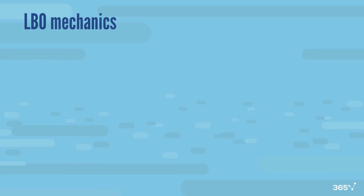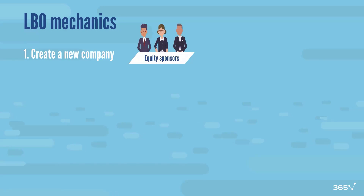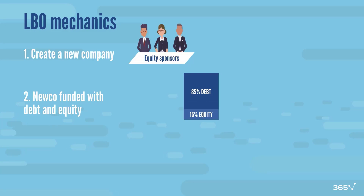In this lesson, you will learn how an LBO works in practice. We can distinguish three main steps that are typical for this process. The first one is the creation of a new company, or NUCO, which will be used for the purposes of the LBO deal. The owners of the NUCO are the equity sponsors carrying out the LBO. Then, in the second stage, once the NUCO is created, sponsors proceed to fund it with equity and debt. The leverage ratio will vary depending on current market conditions and sponsor IRR targets, but in general, we can expect that the NUCO will be funded with 85% debt and 15% equity — a very aggressive approach — or 50% debt and 50% equity, which is conservative for an LBO.